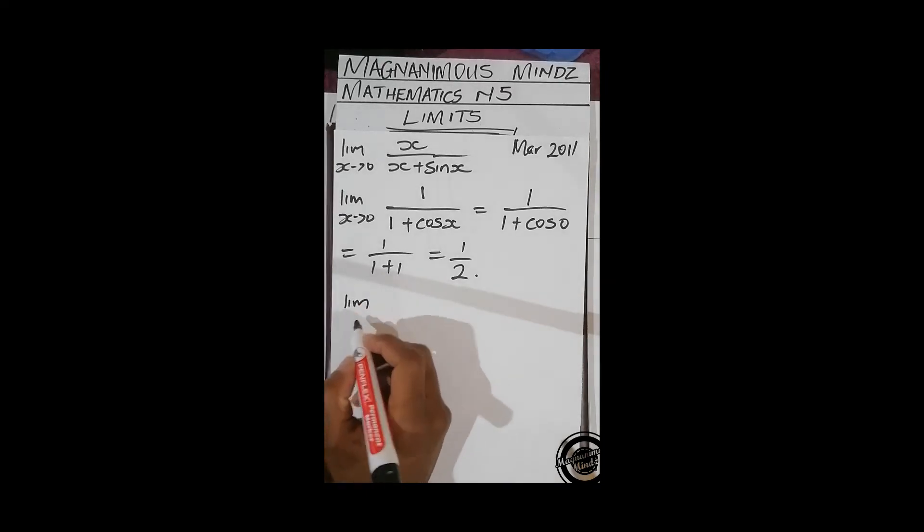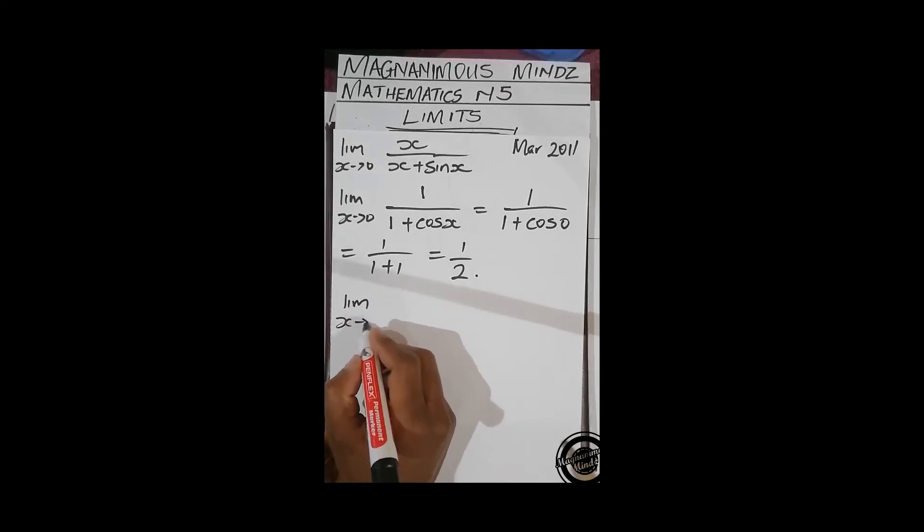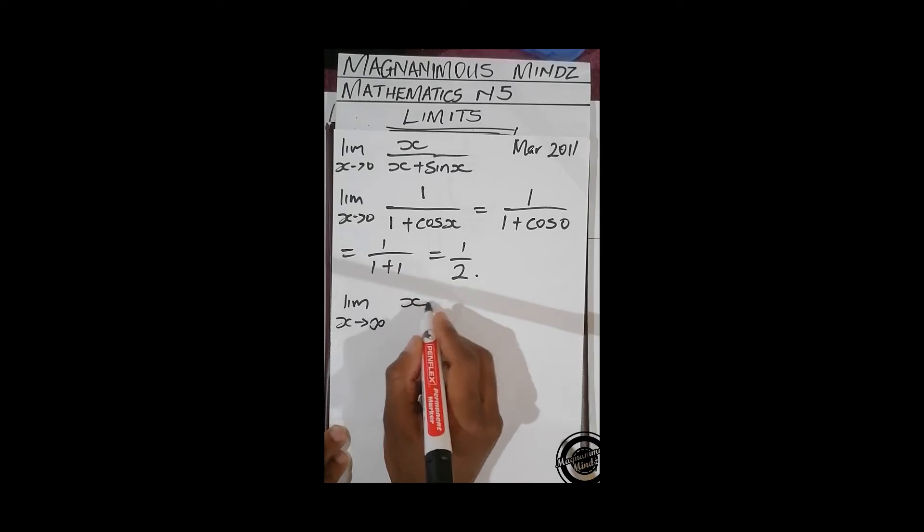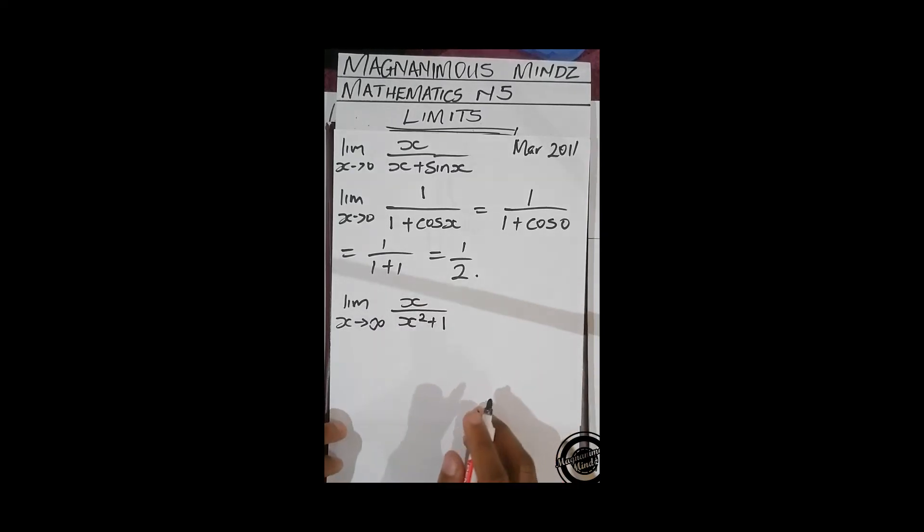And then the next question whereby we're given lim x approaching infinity of x over x² plus 1. Then in this case if we directly substitute, this is going to give us infinity over infinity.